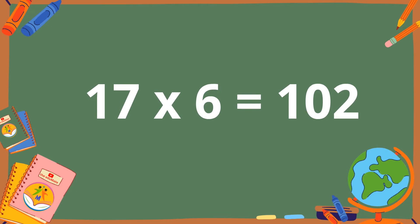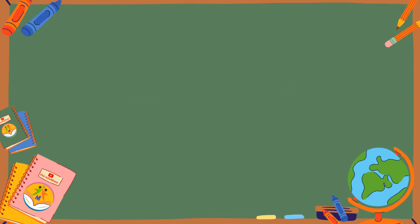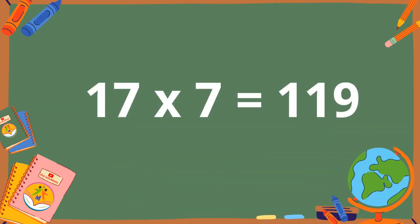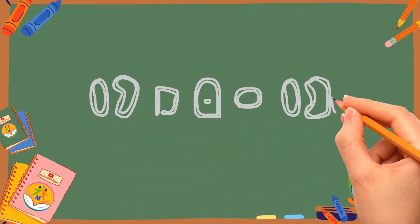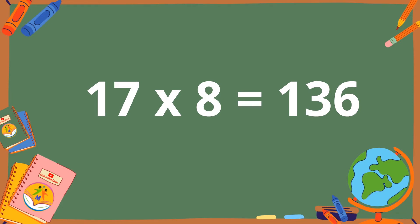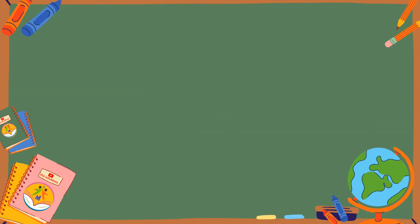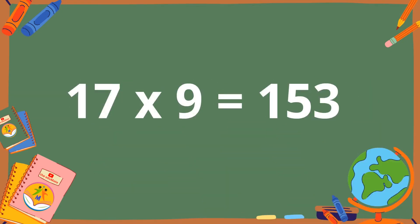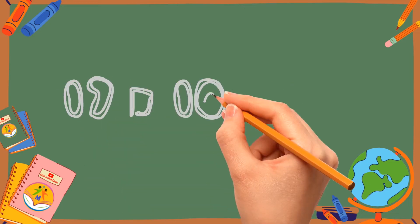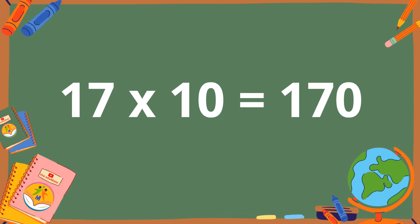17 sixes are 102. 17 sevens are 119. 17 eights are 136. 17 tens are 170.